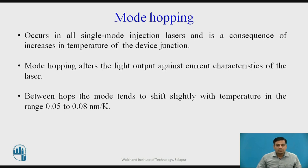The transition — that is, hopping from one mode to another — is not a continuous function of the drive current but occurs suddenly over only one to two milliamperes. Mode hopping alters the light output against current characteristics of the laser and is responsible for the kinks observed in the characteristics of many single-mode devices. Stabilization against mode hopping and mode shift may be obtained with adequate heat sinking or thermoelectric cooling.